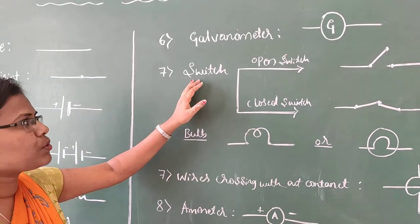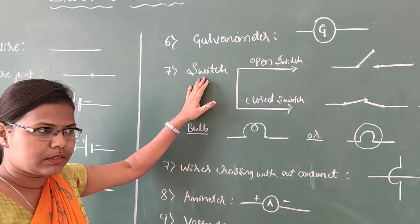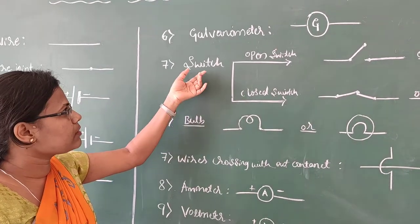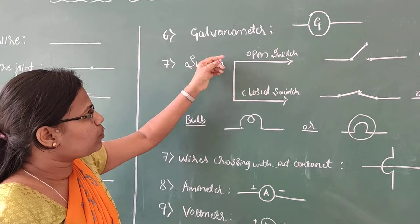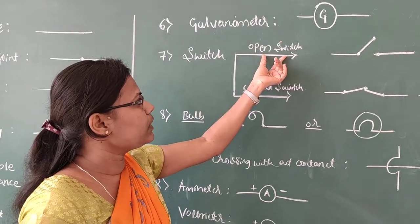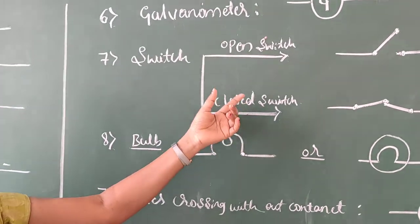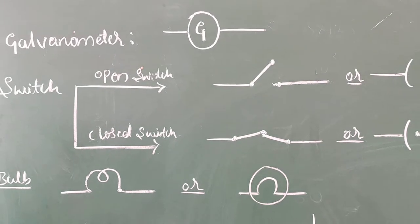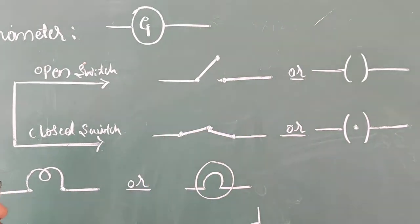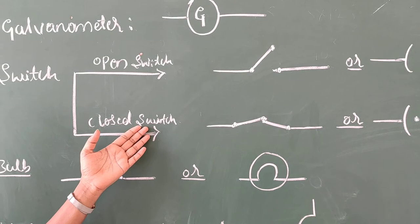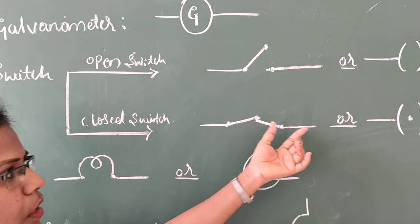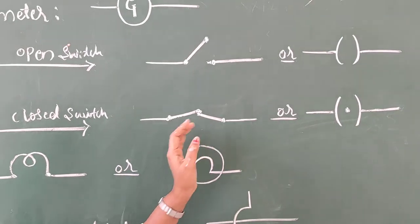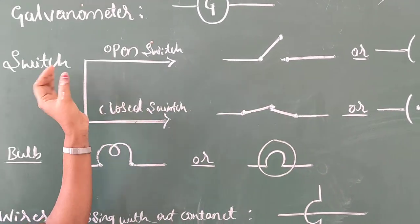Next is the switch. A switch is a device used to make or break an electric circuit. There are two types: an open switch and a closed switch. When the switch is open, the circuit breaks and no current flows. When the switch is closed, the circuit is completed and current flows through the circuit.